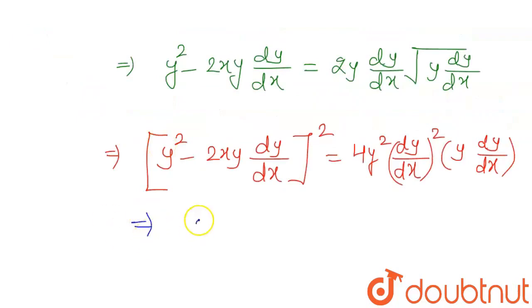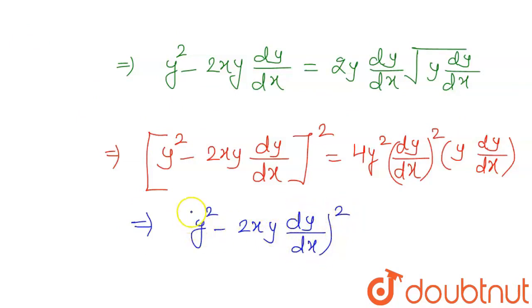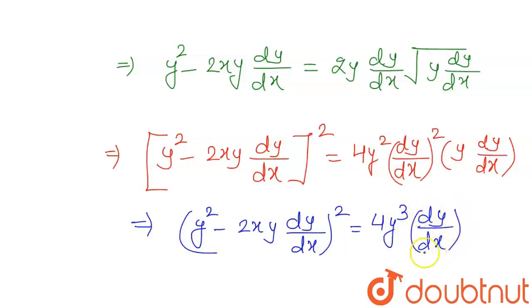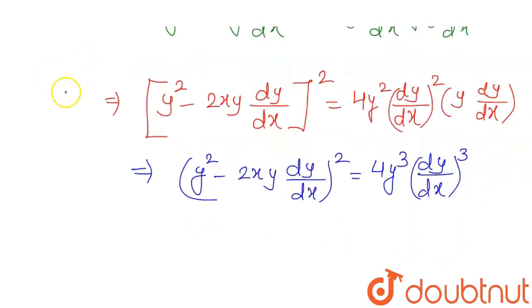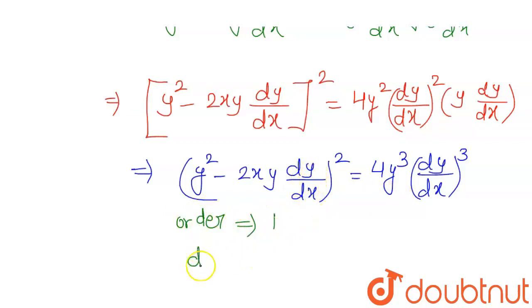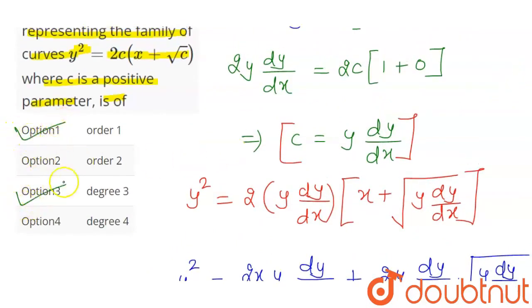The final differential equation is: (y² − 2xy dy/dx)² = 4y³(dy/dx)³. Now to find order and degree: the order is the maximum number of times y is differentiated with respect to x — here it is differentiated once, so order = 1. The degree is the highest power of the highest-order derivative (dy/dx) — the maximum power is 3, so degree = 3. Therefore option 1 and option 3 are the correct options.